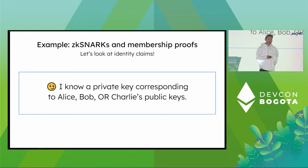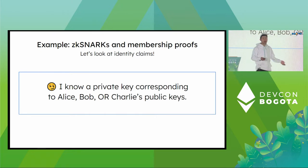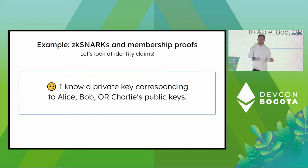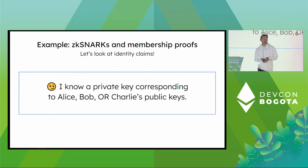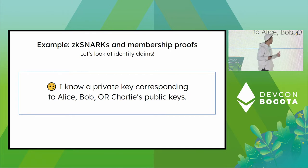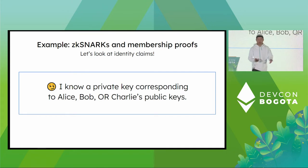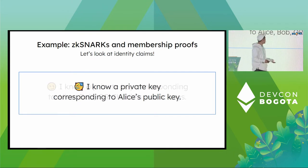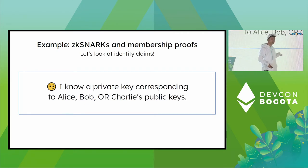Going up one level in complexity, we have claims like: I know a private key corresponding to one of the public keys in a group — for example, one of Alice, Bob, or Charlie's public keys. This is commonly referred to as a group signature or ring signature. We do have cryptographic protocols purpose-built for group signatures, but they are special-purpose and the math is often incompatible with ordinary signature schemes. We figured out group signature schemes a few years after digital signatures, but building such a system requires bootstrapping an entirely new key registry and a different key generation algorithm.